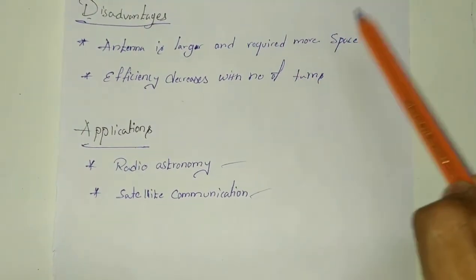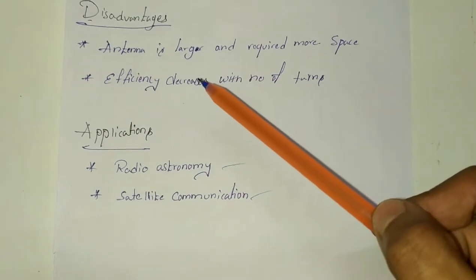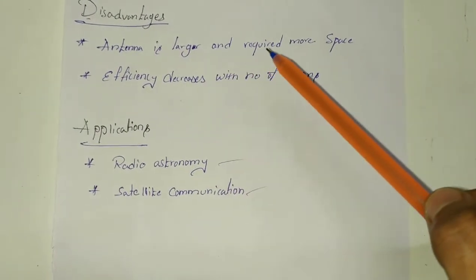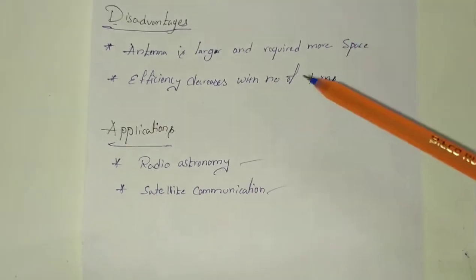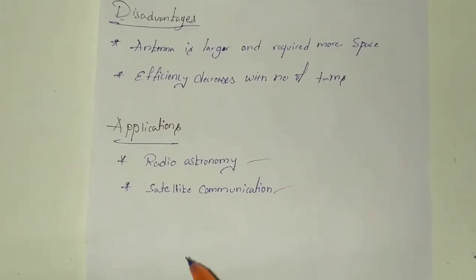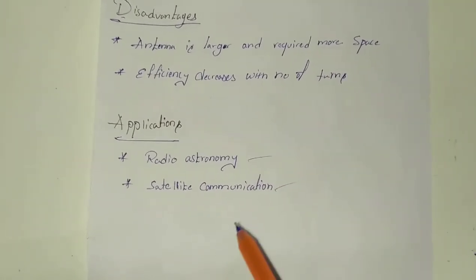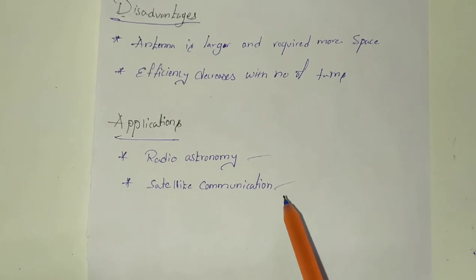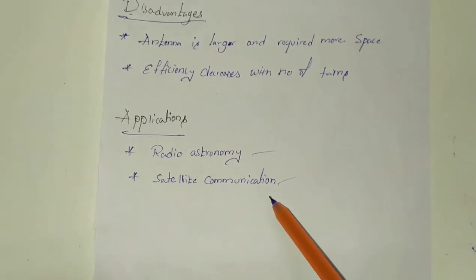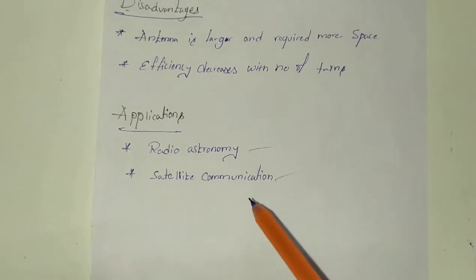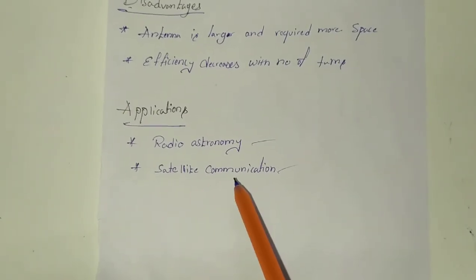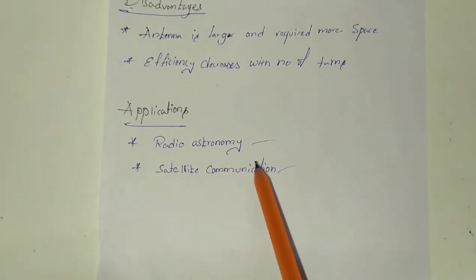The disadvantages of helical antenna are that it is larger and requires more space, and the efficiency of the helical antenna decreases as the number of turns increases. Finally, the applications of helical antenna include radio astronomy and satellite communication. In satellite communication, such as moon-to-earth communication, helical antennas are used.